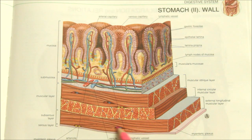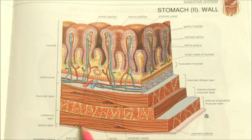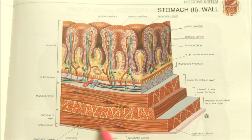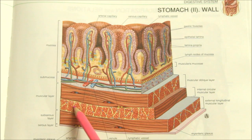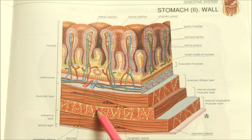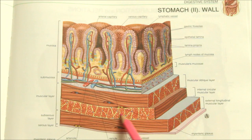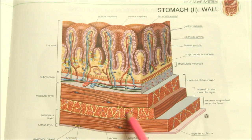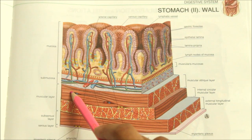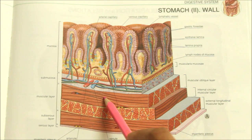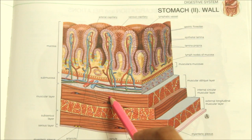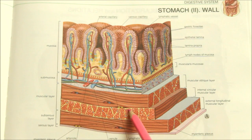The longitudinal fibers are the most superficial layer of the muscle coat, mainly seen along the curvatures. The inner circular fibers encircle the body and are thickened at the pylorus to form the pyloric sphincter. The deepest layer consists of oblique fibers which loop over the cardiac notch.